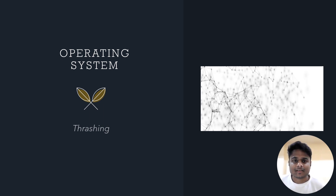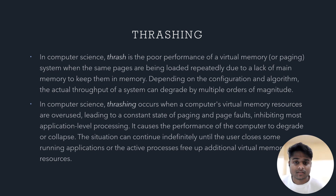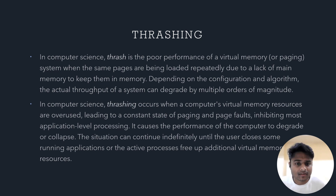Hello friends, today we will be learning about thrashing and various concepts about it. In computer science, thrashing occurs when a computer's virtual memory resources are overused, leading to a constant state of paging and page faults, inhibiting most application-level processing. It causes the performance of the computer to degrade or collapse, and this situation can continue until the user closes some running applications or frees additional virtual memory resources.